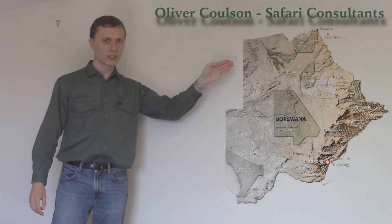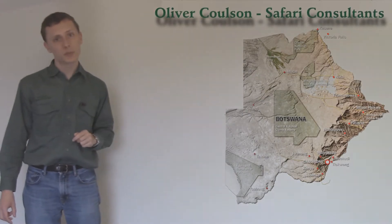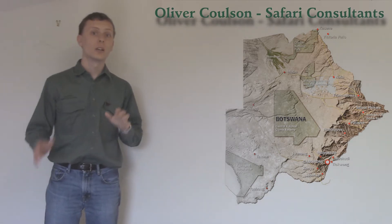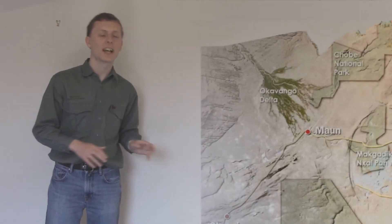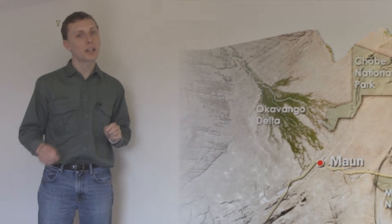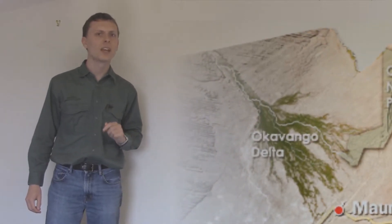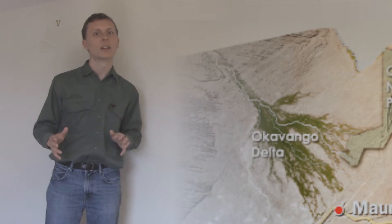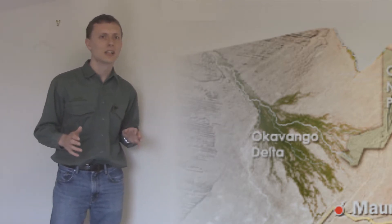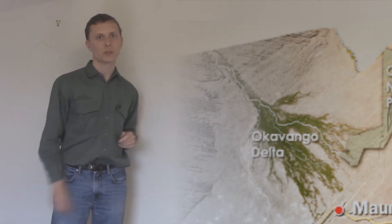The Okavango Delta is probably Botswana's most famous wildlife region. Looking back into the country's geological past allows us to explain how this unique habitat was formed. In this video we'll give a brief outline of how the historic tectonic activity led to the changes that formed this beautiful landscape.